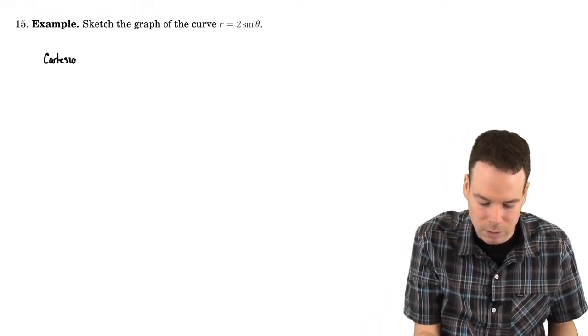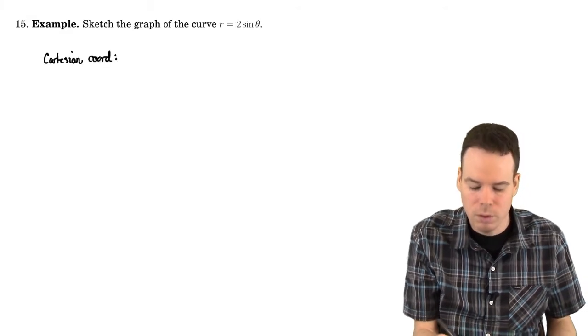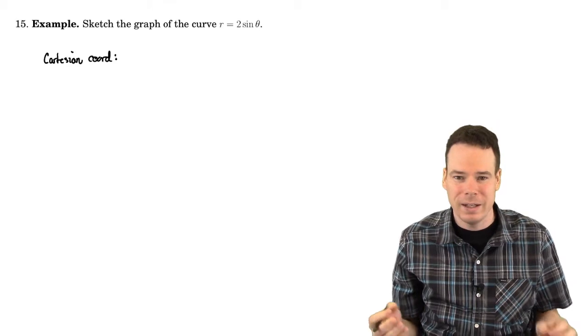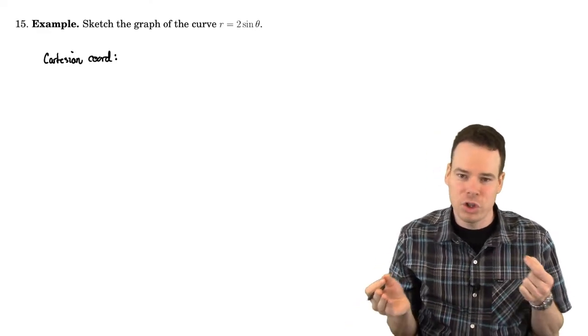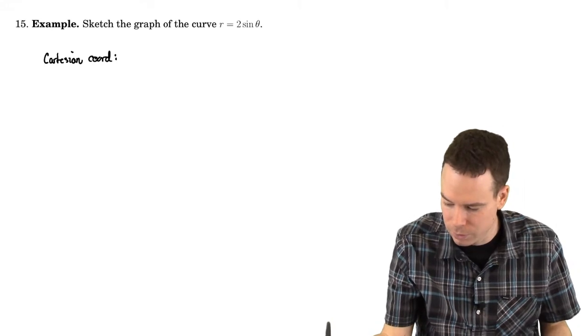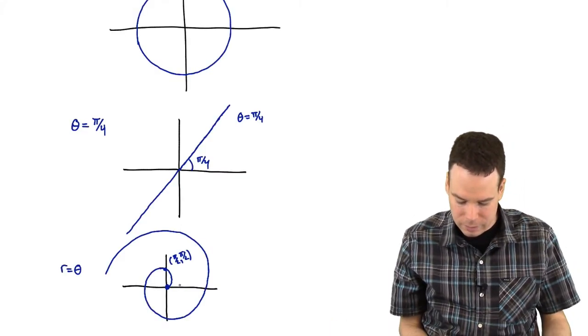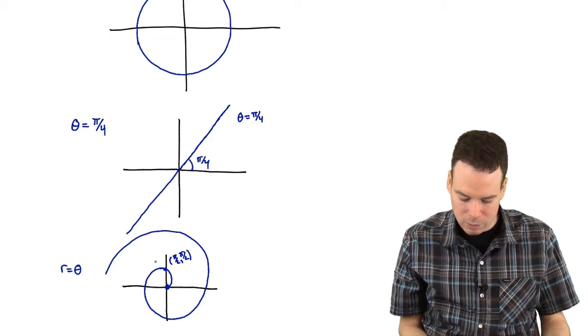So I'm going to start by sketching it in the Cartesian coordinate system. The only reason I want to sketch it there is because I want to get a feel for how does r change when theta changes. If you want to think of it in comparison to just the last example, here I was just noticing that as I let my theta value increase, my r value increased.